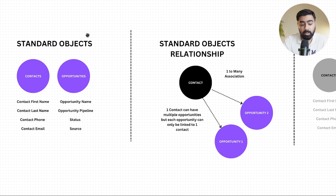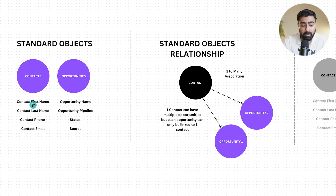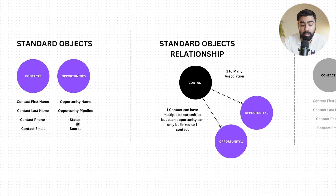Contacts and opportunities are standard objects that have been in Go High Level for as long as possible. They have some default custom fields attached — like first name, last name, phone, email. And when we talk about opportunities, we have opportunity name, pipeline, status, and source. These are system fields tied into an object, which is opportunities in this case, and contacts in the other.